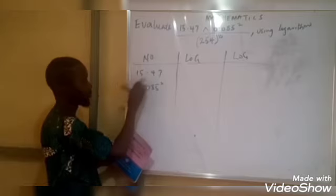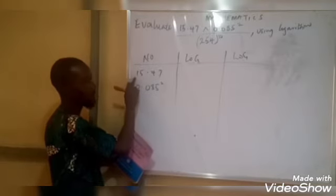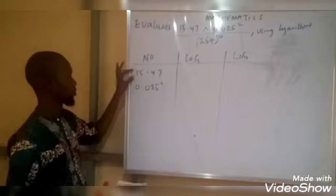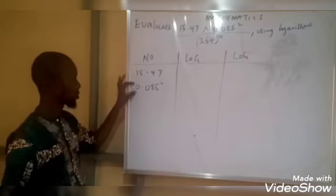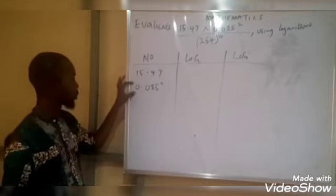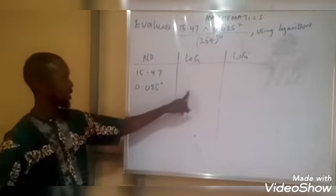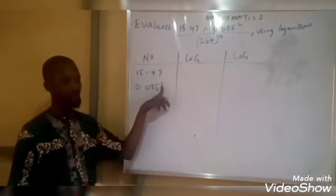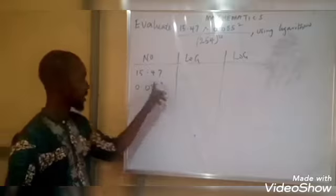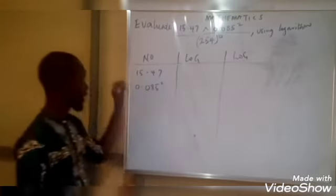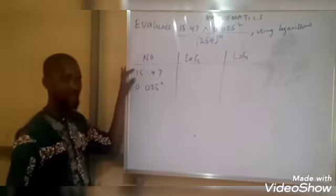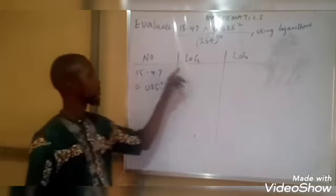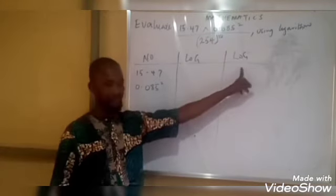This first number, 15.47, occurs single — it is without power and without any root. While this second number is with the power of two. So it shows that this one will have to undergo the second column first. When processed, that result will be transferred. But the one that occurs single without any such character will not be recorded there at all — it will be recorded straight.